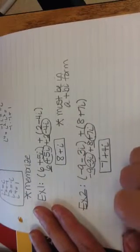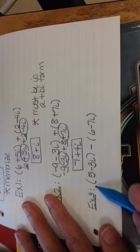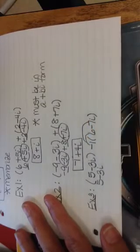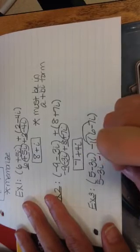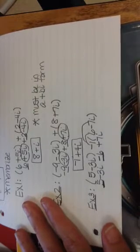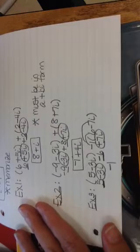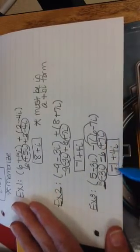Example 3: (5 minus 3i) minus (6 minus 7i). I have to distribute. In front of the first parentheses there's a positive 1, so 5 minus 3i stays. But the second set has a negative 1, so I distribute: negative 1 times 6 is negative 6, and negative 1 times negative 7i is positive 7i. Combining real parts: 5 minus 6 is negative 1. Imaginary parts: negative 3i plus 7i is positive 4i. Answer: negative 1 plus 4i, in a plus bi form.